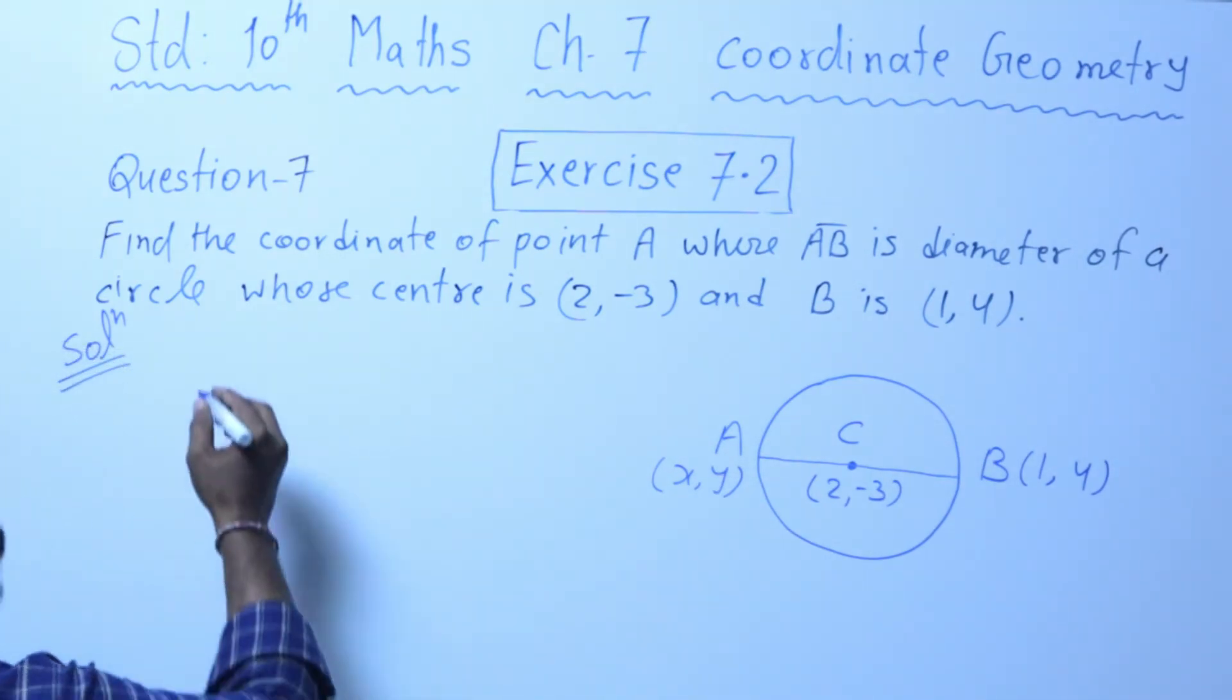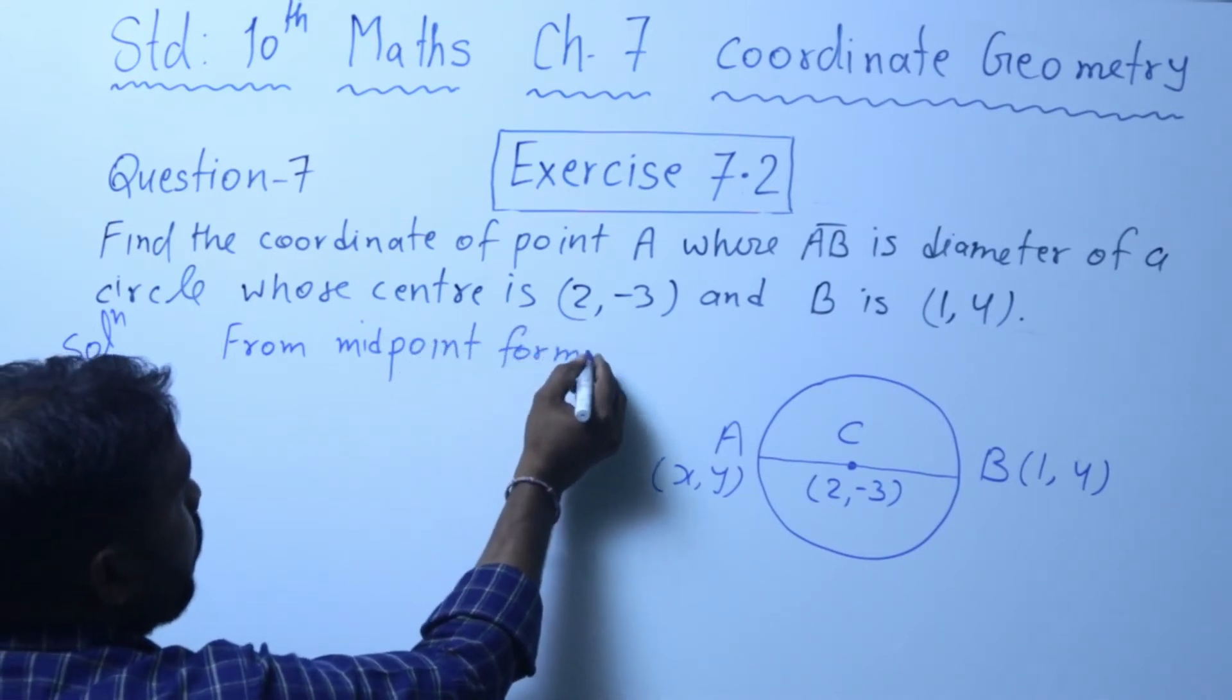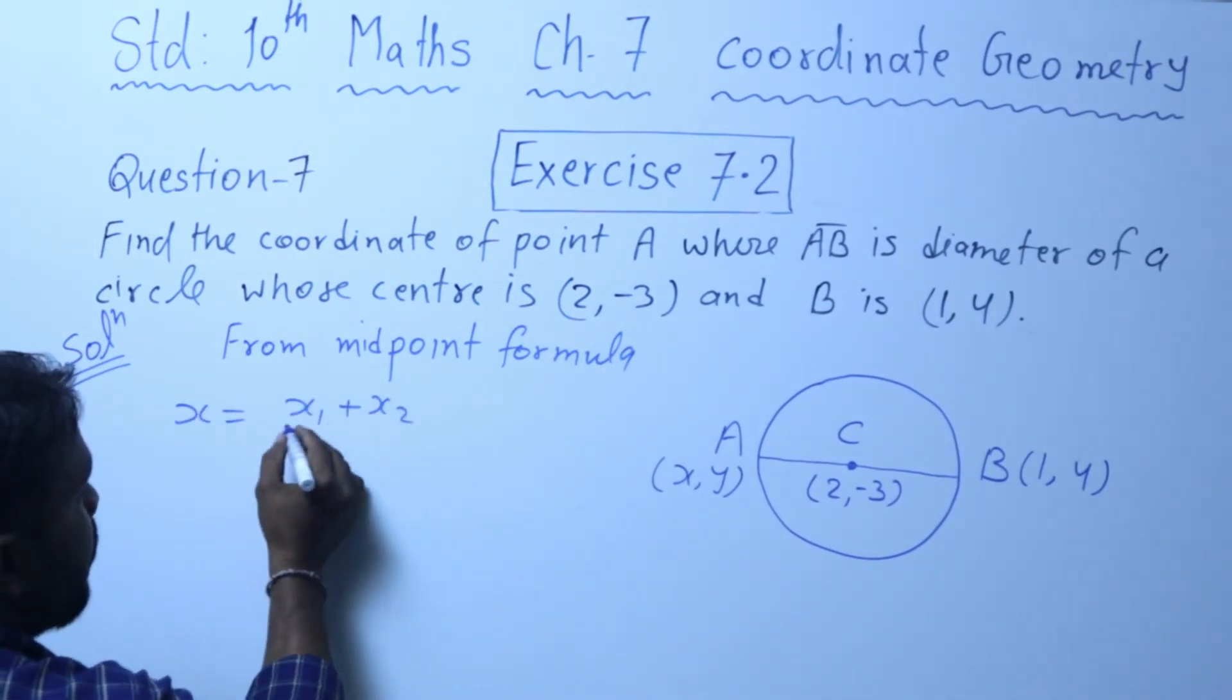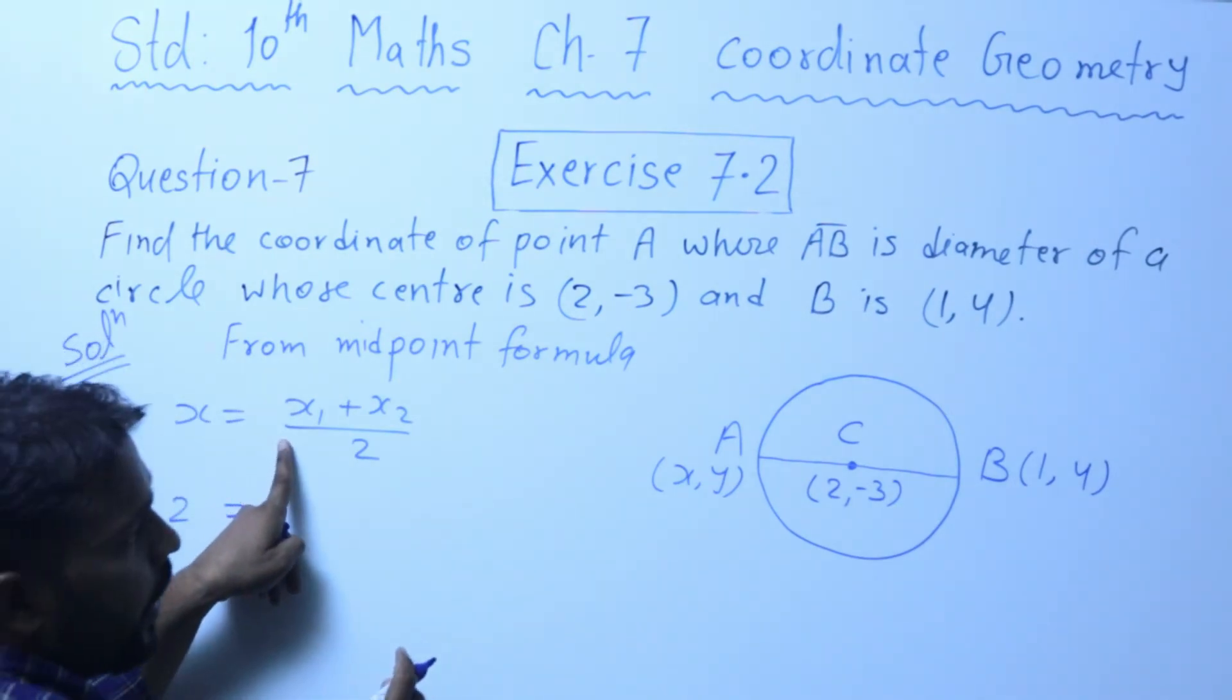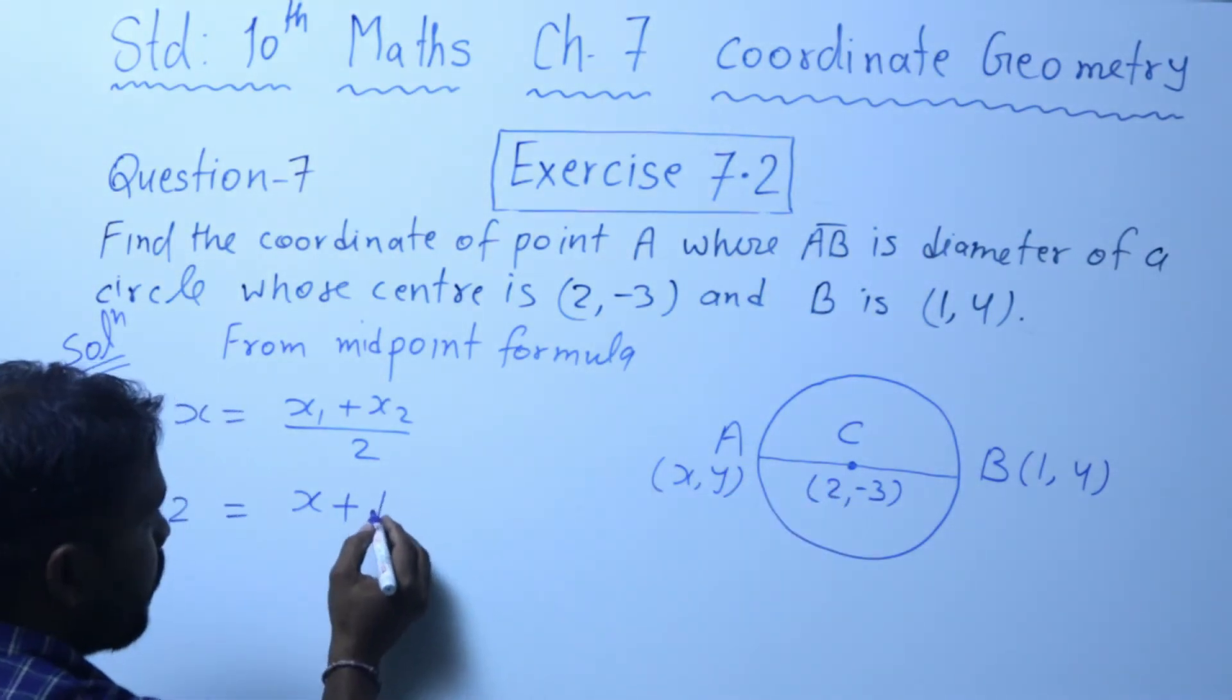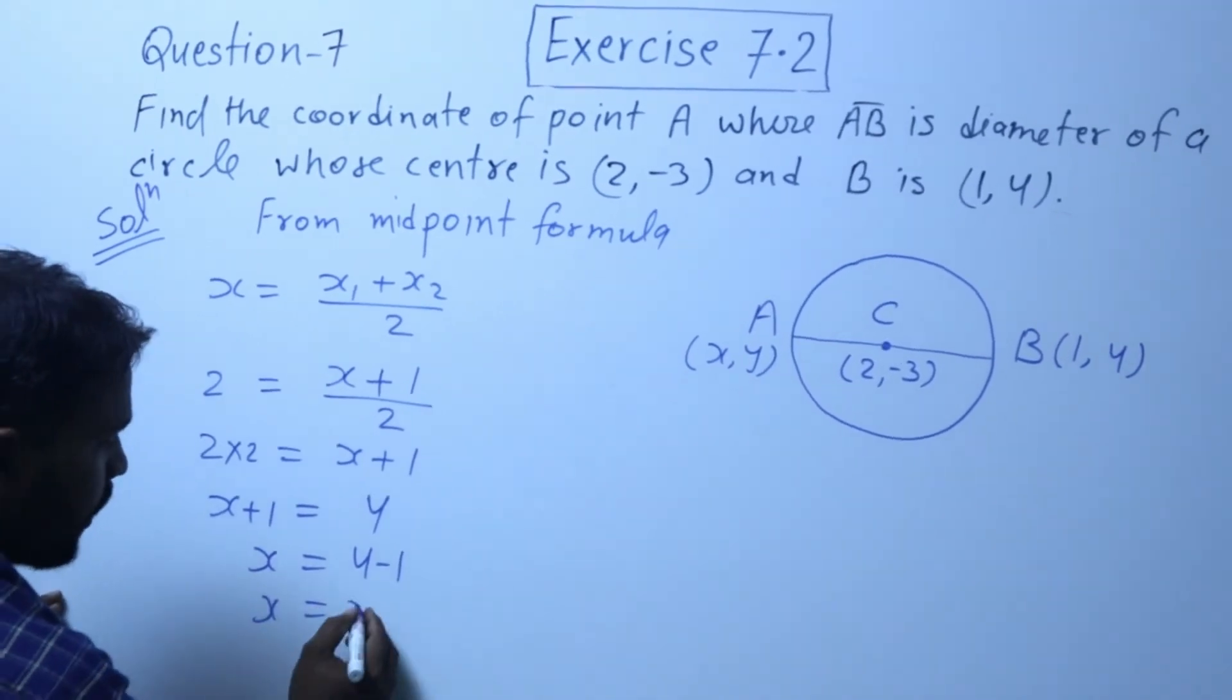Now from midpoint formula, x = (x₁ + x₂)/2. So friends, here this is x₁, this is x₂, and this is x. Means 2 = (x + 1)/2. Solving this, 2 × 2 = x + 1, so x + 1 = 4, x = 4 - 1, x = 3.